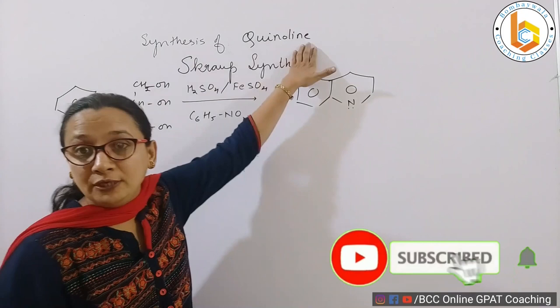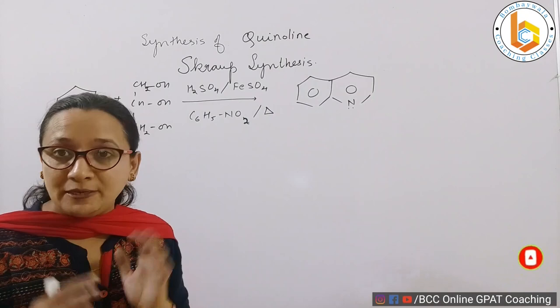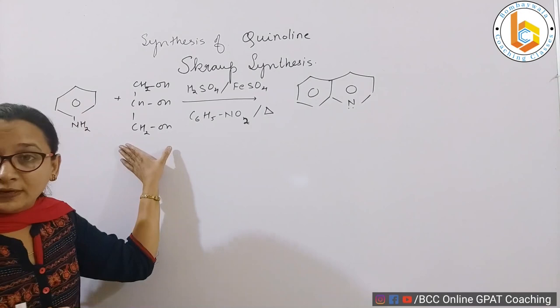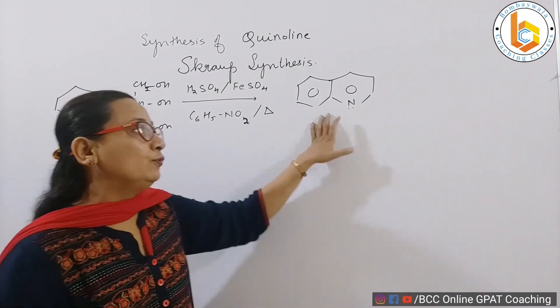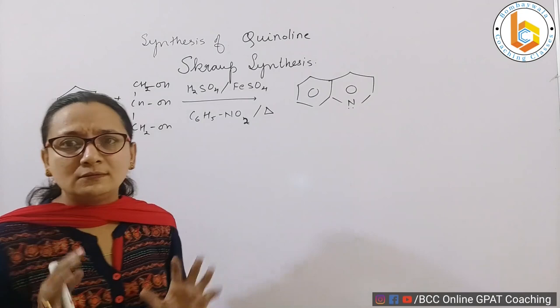How this Skraup synthesis takes place: It is a reaction of aniline with glycerol in presence of sulfuric acid, ferrous sulfate, nitrobenzene, and heat, and finally it will give you quinoline. Now this doesn't look understandable at all, so let us understand one by one what these reagents are going to do.